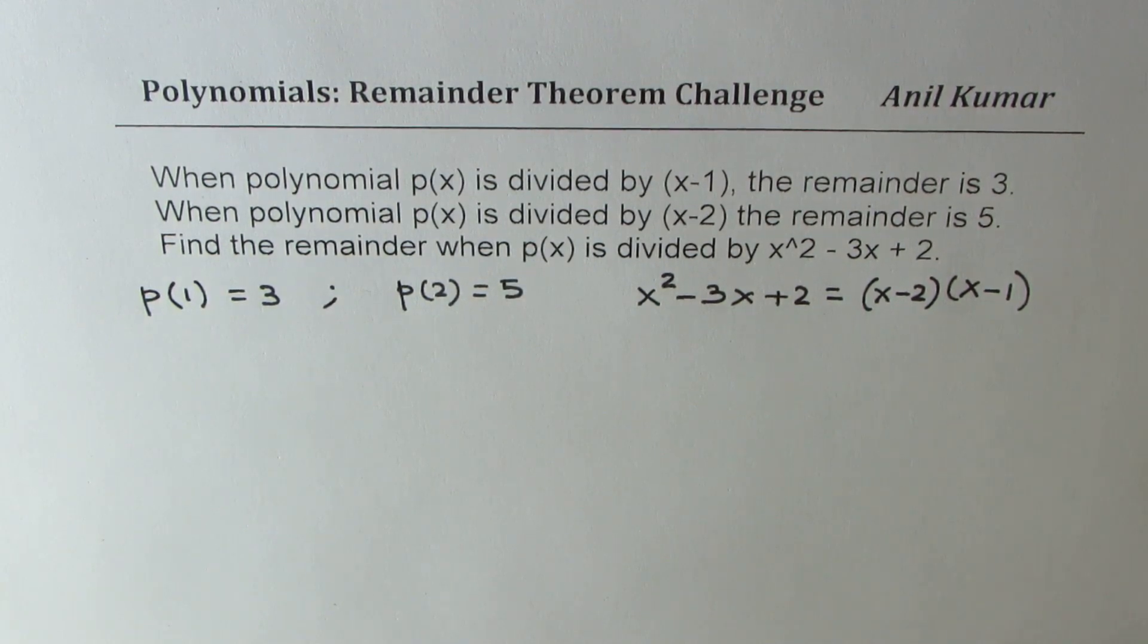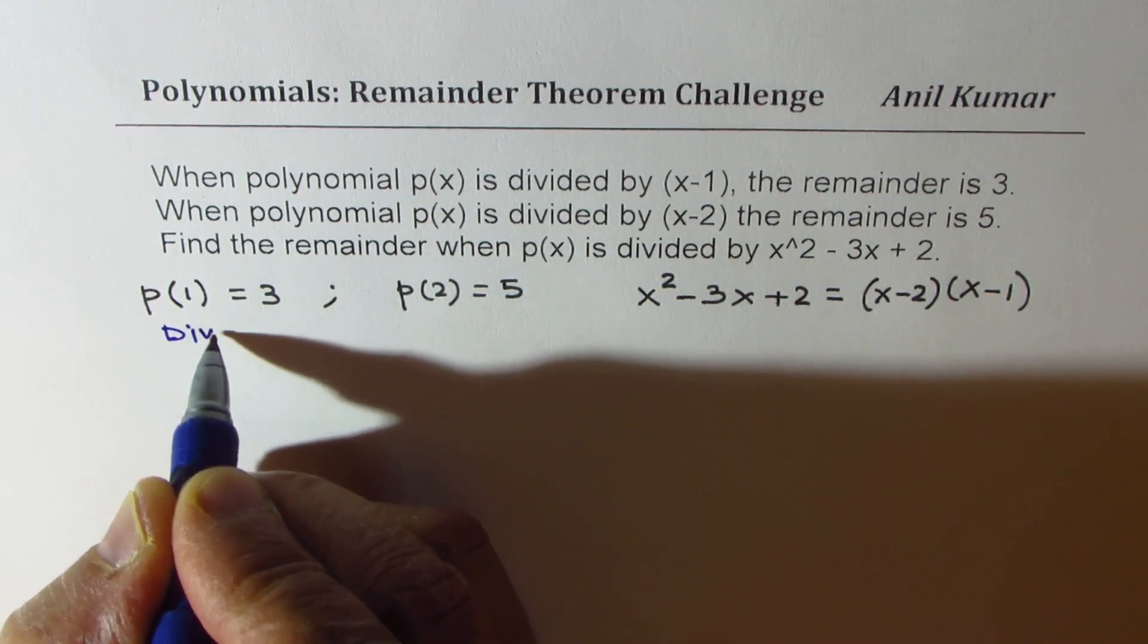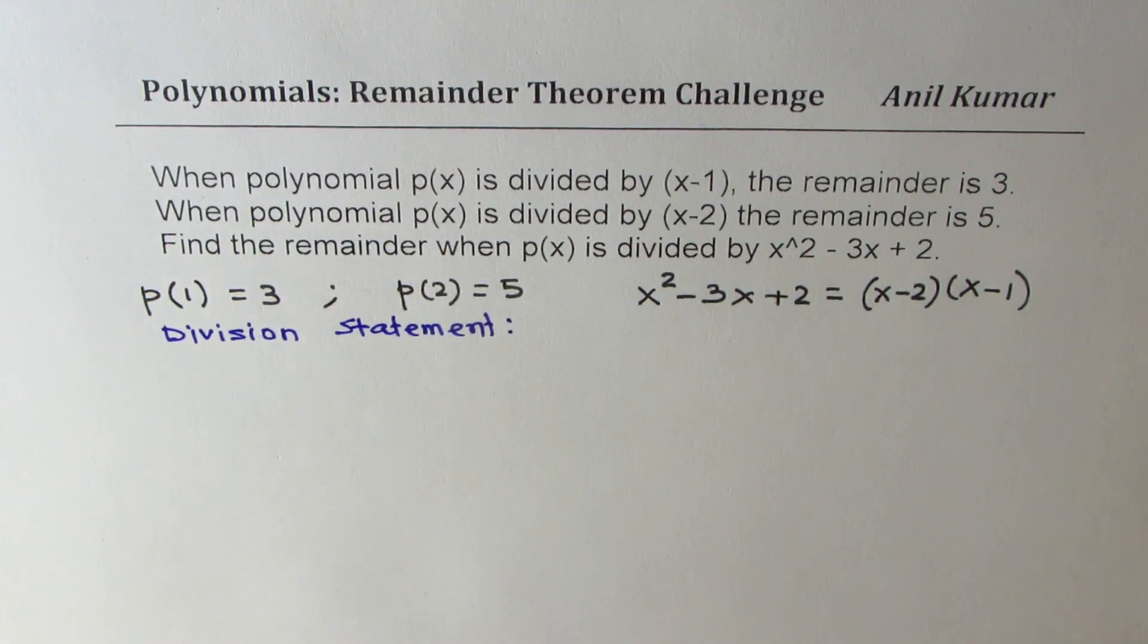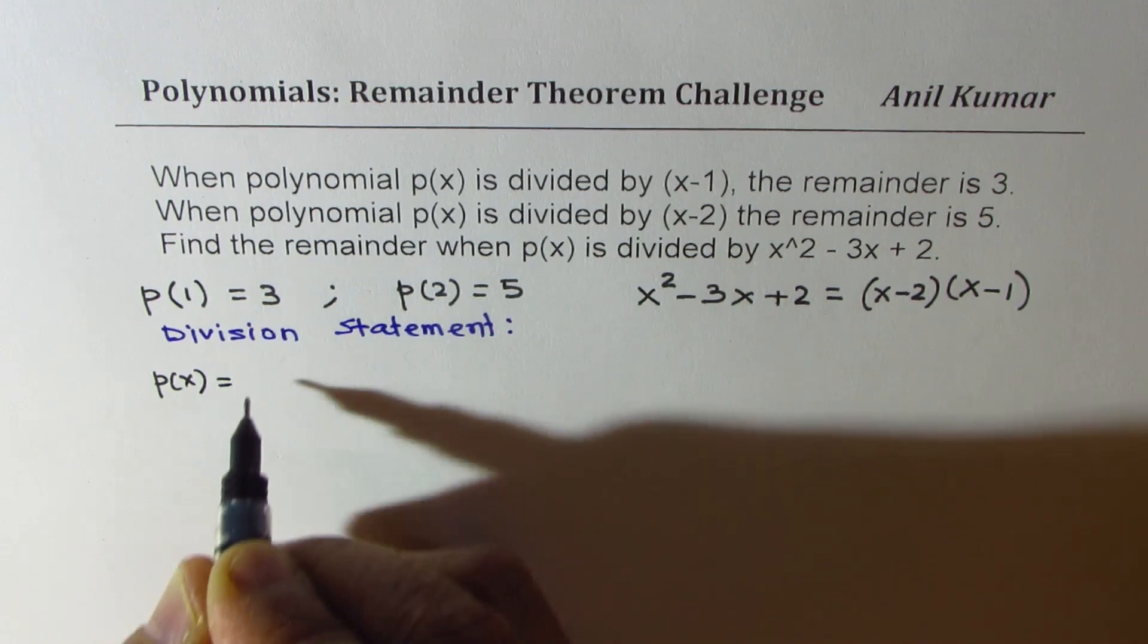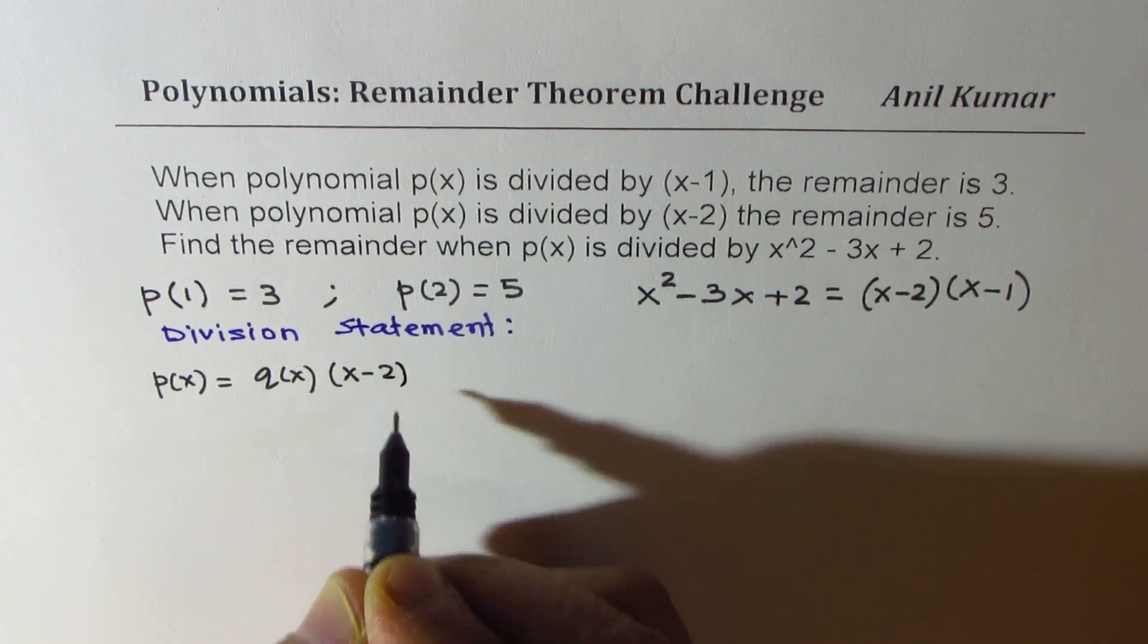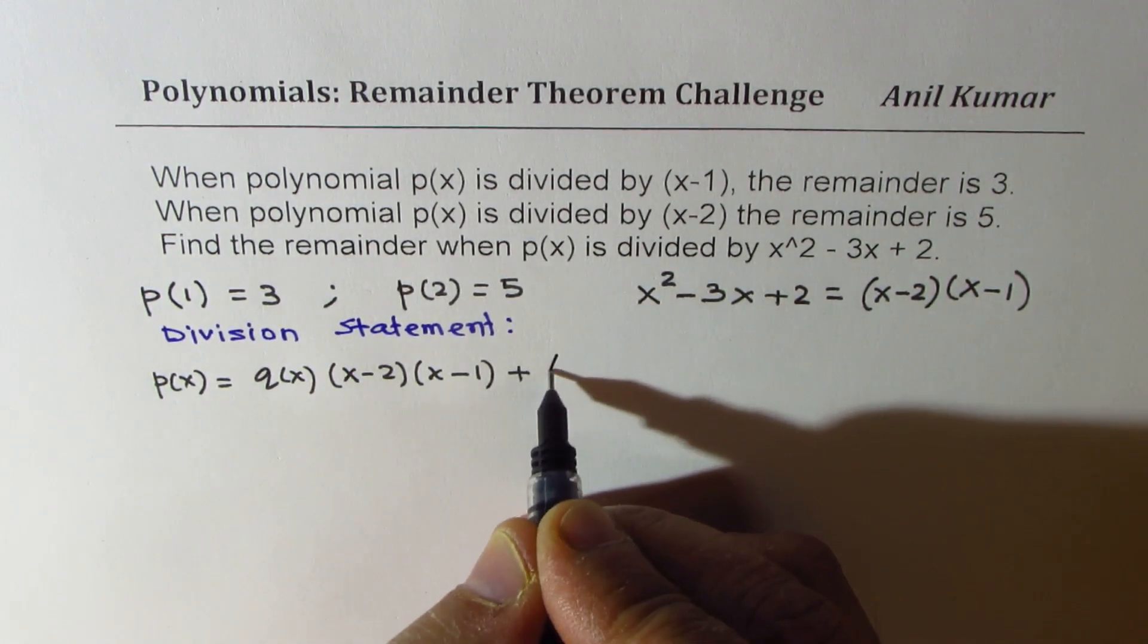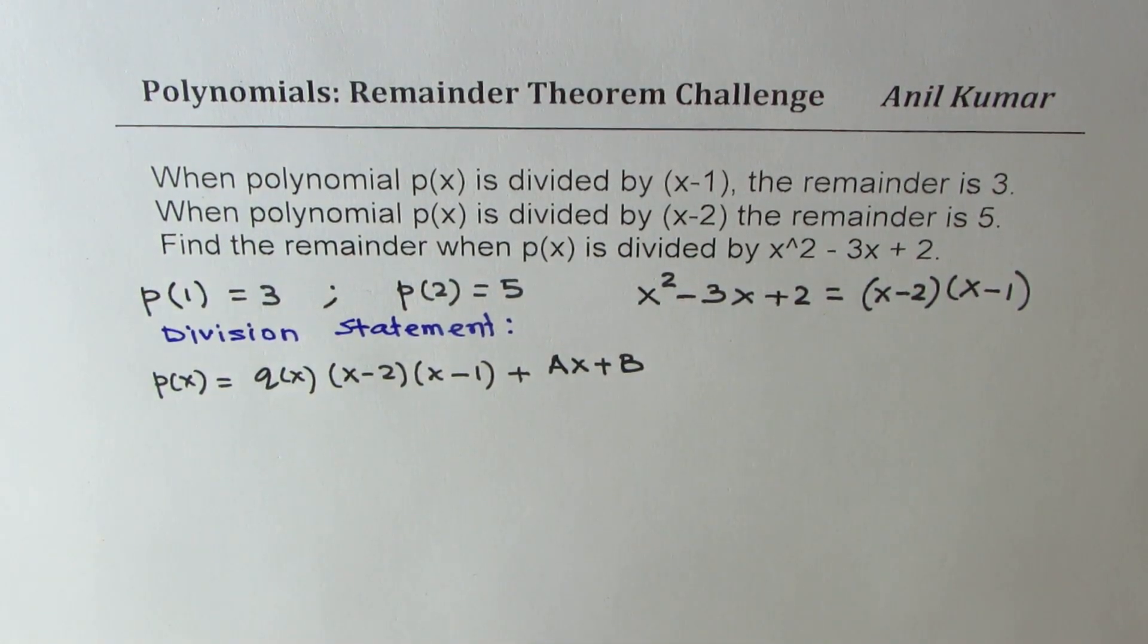To solve such questions, we are going to use the division statement. We could write that the polynomial p(x) is equal to some quotient q(x) times the divisor (x-2)(x-1) plus the remainder. Now since the divisor is quadratic, the remainder will be linear, so I'm taking this as Ax + B.